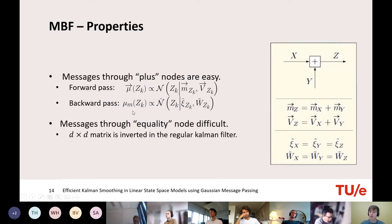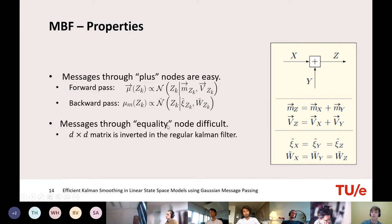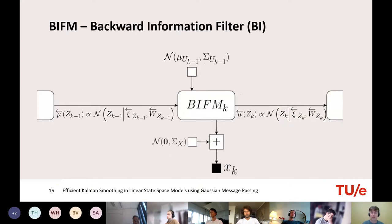Further properties of MBF: messages to the plus node pass through very easily — in the forward pass you just add the parameters of incoming edges, and in the backward pass messages are invariant through plus nodes. This is likely why this uncommon parametrization was chosen: messages shoot through all plus nodes, making inference fast. However, messages to the equality node are difficult, requiring an inverse proportional to d — the output dimensionality.